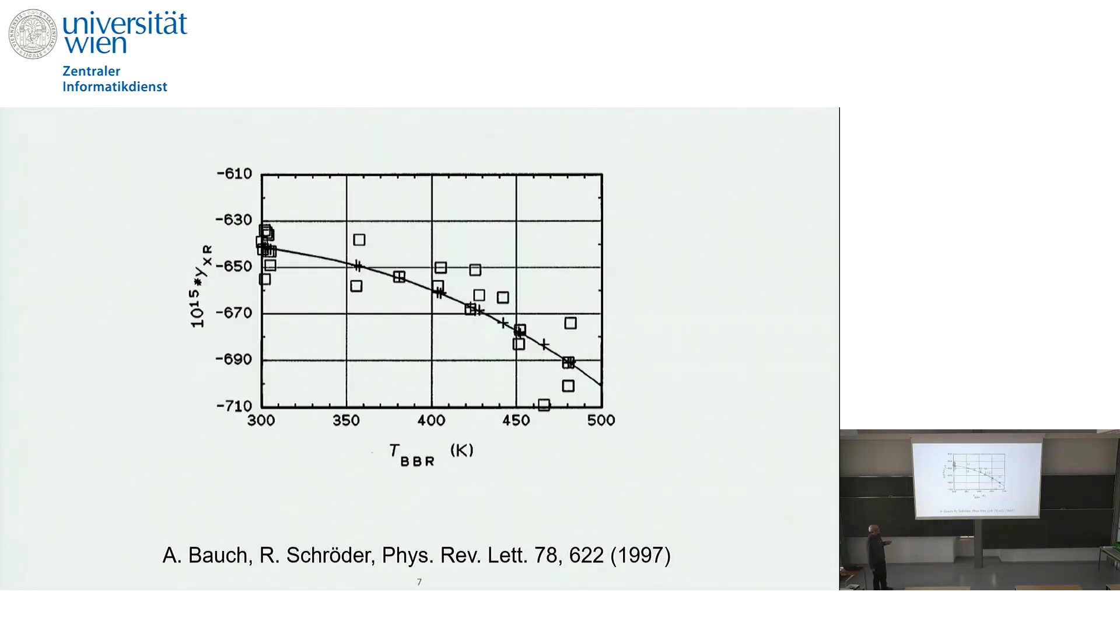But this is the result of the experiment. So the solid line here is the theoretical estimate based on the coefficients that were used in the Itano theory. And then you can see the experimental points with some scatter, but confirming basically the theoretical prediction.